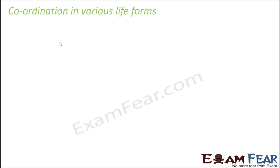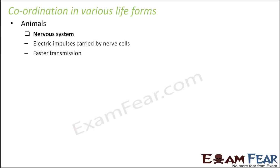Now let us look at coordination in different living organisms. In animals, we have a nervous system where electric impulses are carried by nerve cells. In order for synchronization to take place, information needs to be carried from one part of the body to another. In the nervous system, information is carried in the form of electric impulses, and they are carried by the nerve cells. We will talk about how electric impulses are generated and carried when we discuss the nervous system in detail.